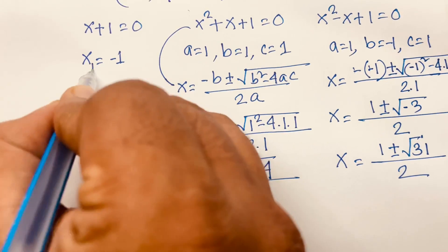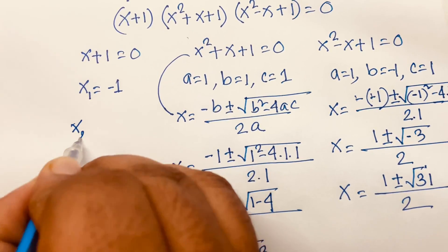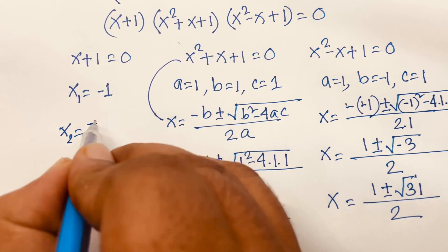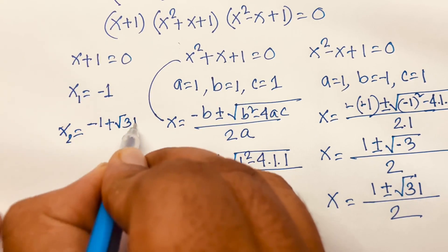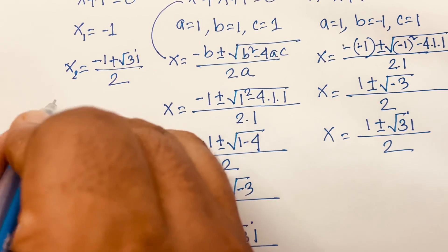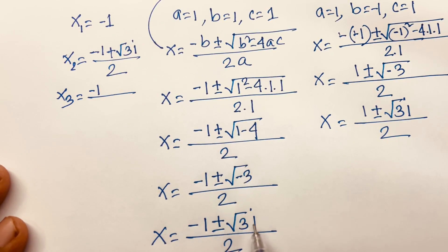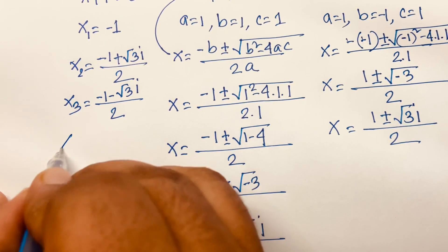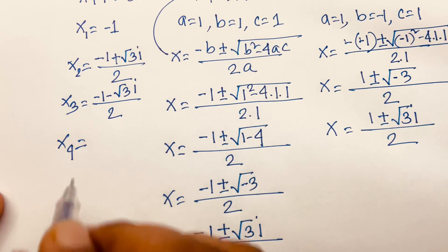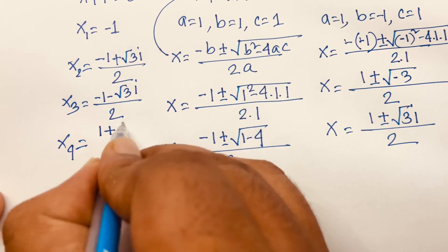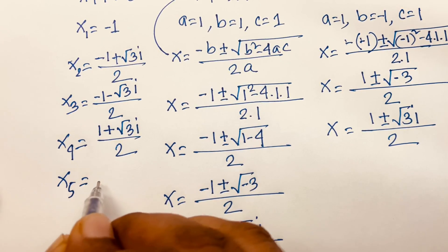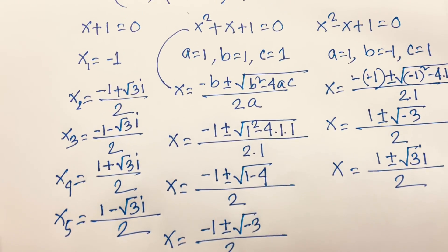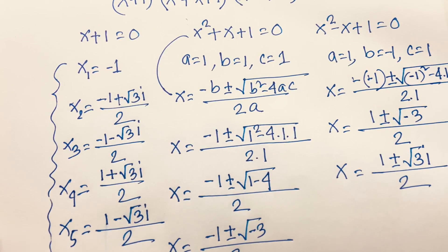So the five solutions are: x₁ = -1, x₂ = (-1 + √3·i) / 2, x₃ = (-1 - √3·i) / 2, x₄ = (1 + √3·i) / 2, and x₅ = (1 - √3·i) / 2. These are our final answers: x₁, x₂, x₃, x₄, and x₅.